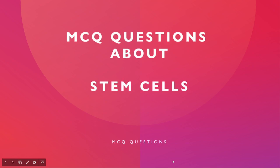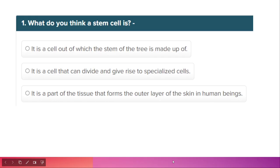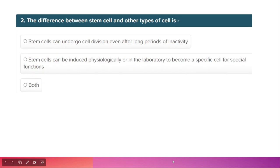Today we are going to discuss some MCQ questions on the topic of stem cells. The first question is: what is a stem cell? The options include whether it is made up of tree stem material. The correct answer is: it is a cell that can divide and give rise to specialized cells. A stem cell is an undifferentiated cell that can divide into any kind of cell.